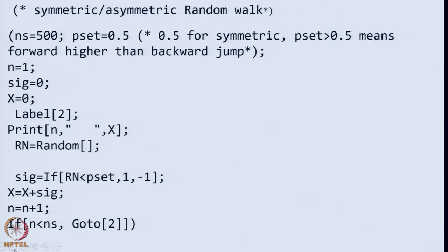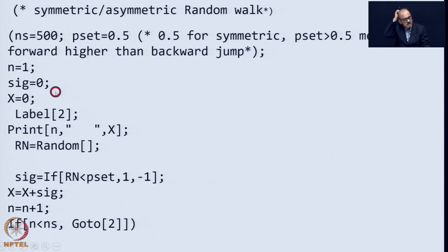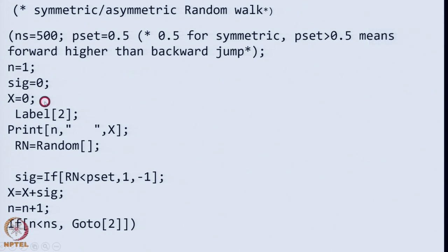This is the program here. Some 500 step random walk has to be generated. Here I consider P set is a value which you assign. If it is 0.5 it is for symmetric and if you put say 0.6 then it means that the forward jumps are higher than the backward jumps. This is basically a beginner to a do loop to start with some integer and some initial values of sigma.